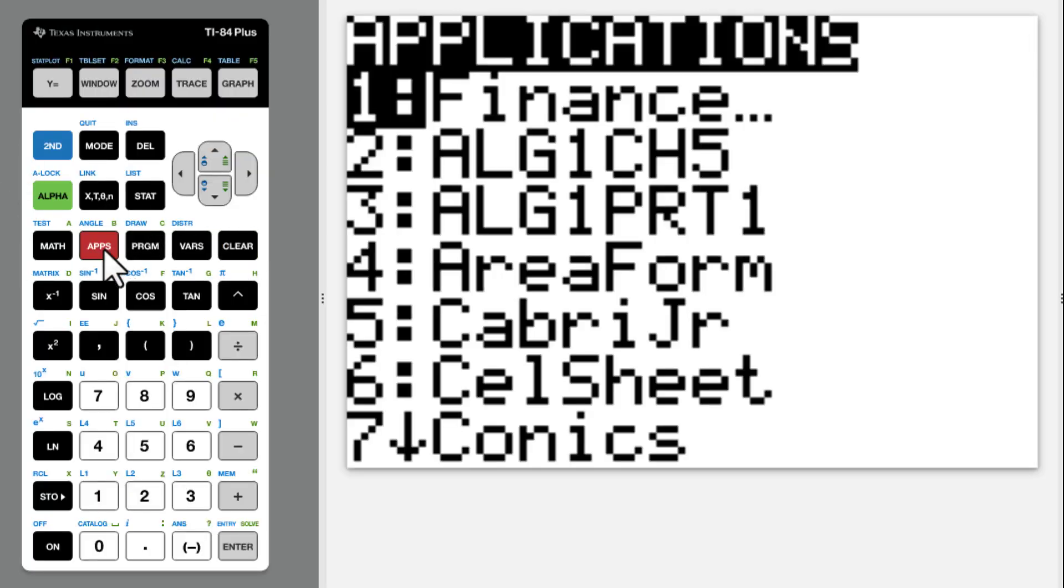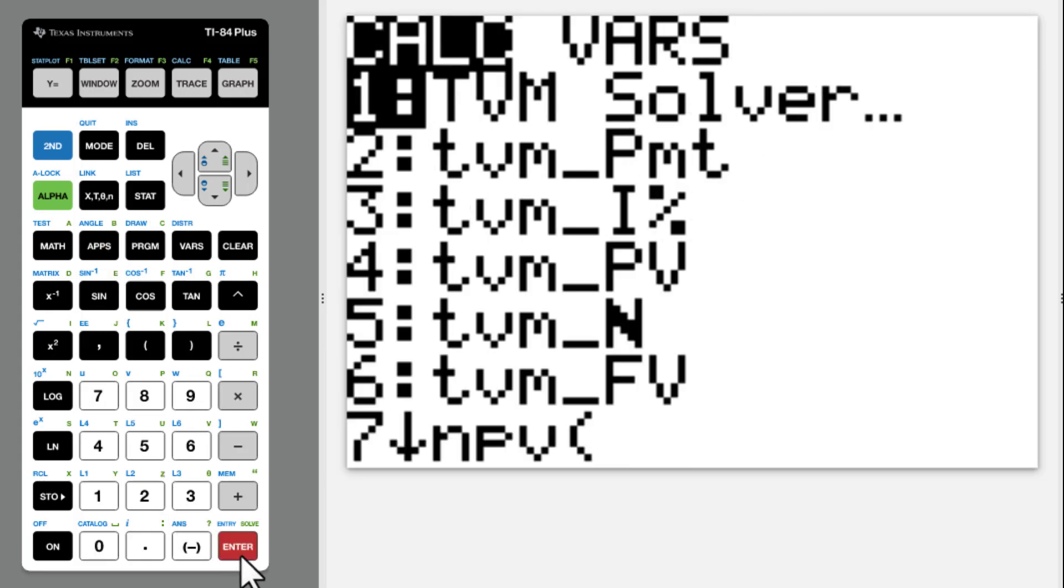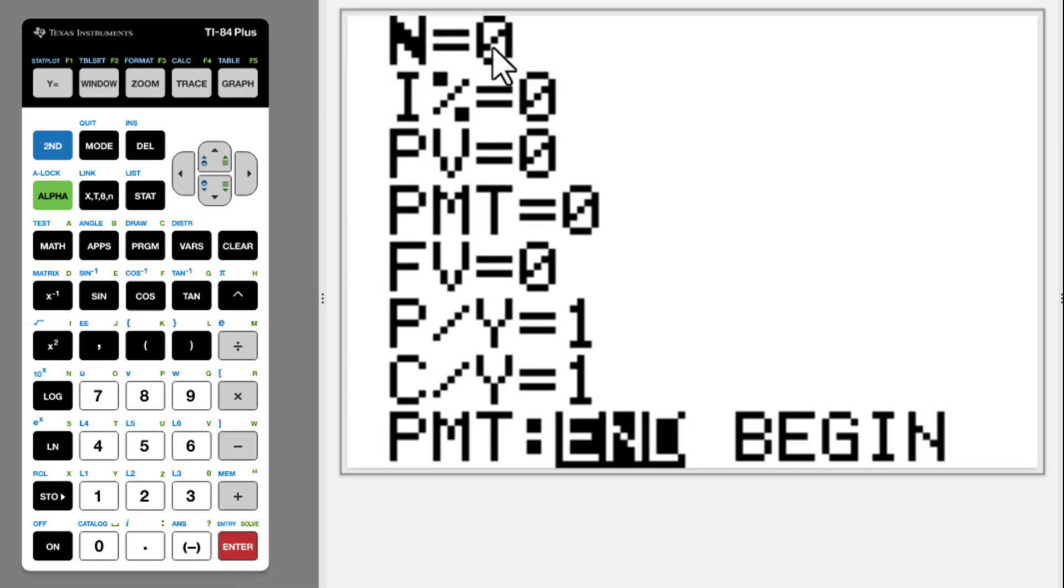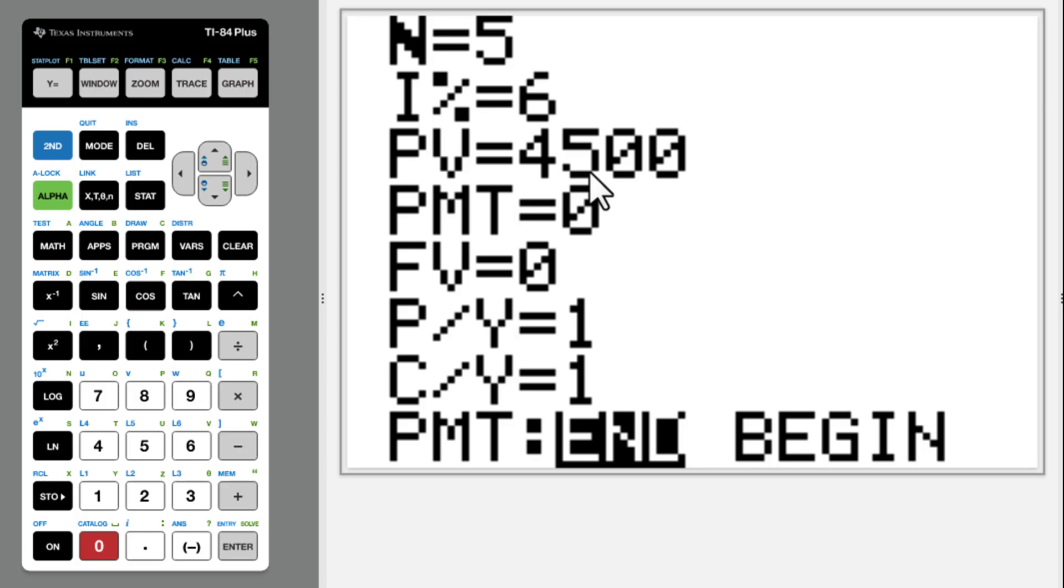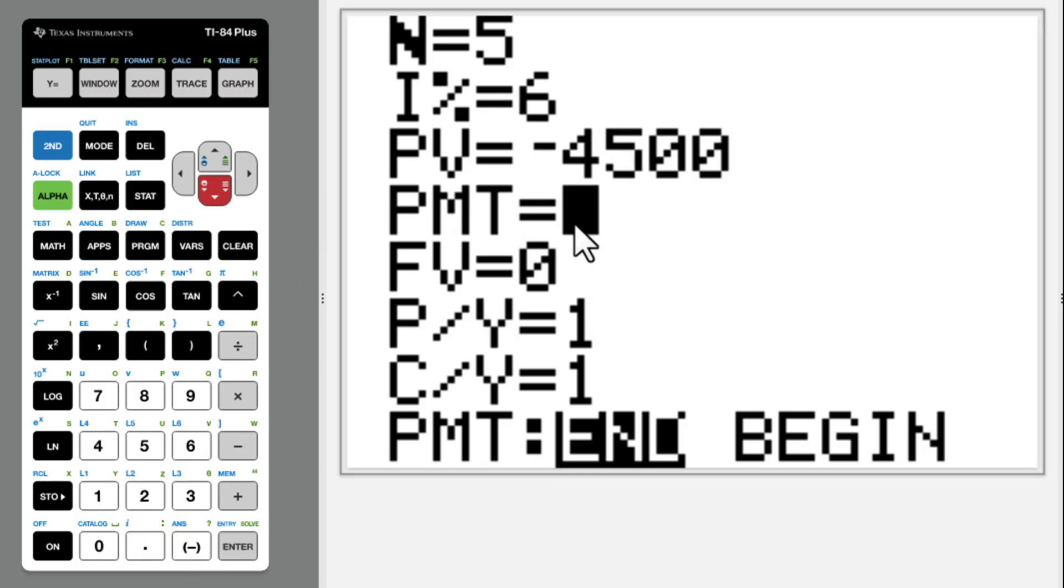In this situation, we go to X, Finance, Enter, TVM Solver, Enter. This N is 2.5 times 2. Interest is 6. PV is $4,500. You took it out of your pocket, it's negative. In this question, no payment, so we put 0.